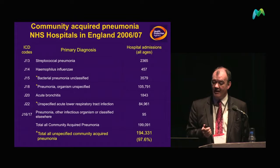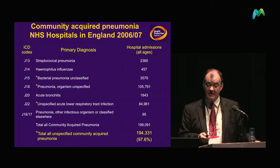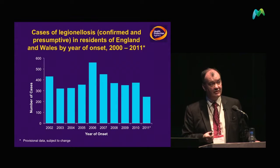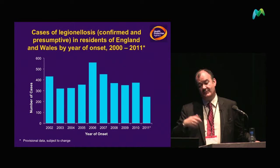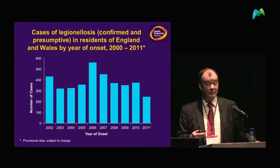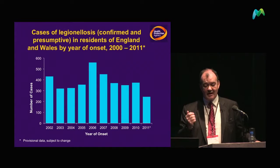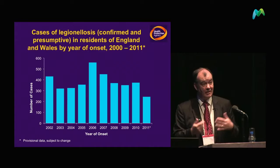That represents an enormous challenge in trying to refine what the actual prevalence of Legionella is. However, a study done in Nottingham estimated the prevalence at about 3%. Given that this would equate to 3,000 cases of Legionella, and we only see roughly 300, there is a big disparity between what might be happening and what is actually being reported.